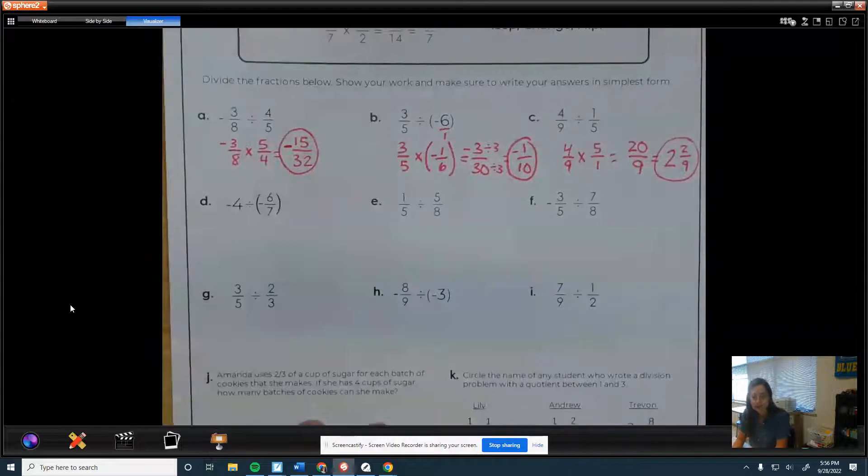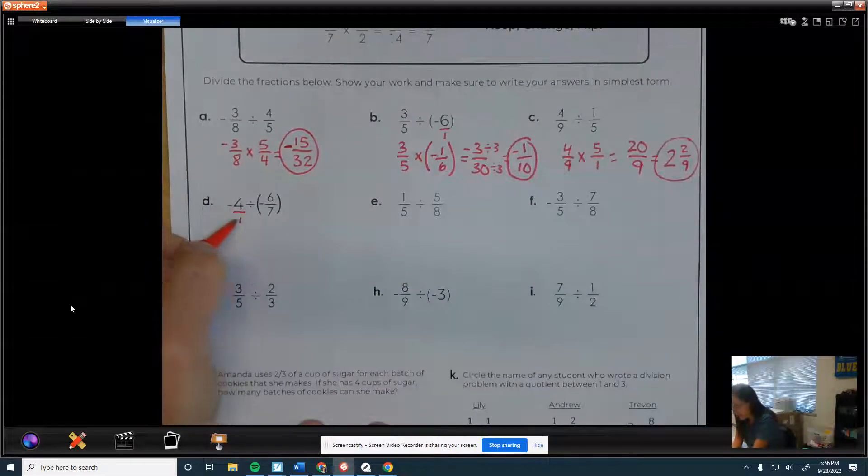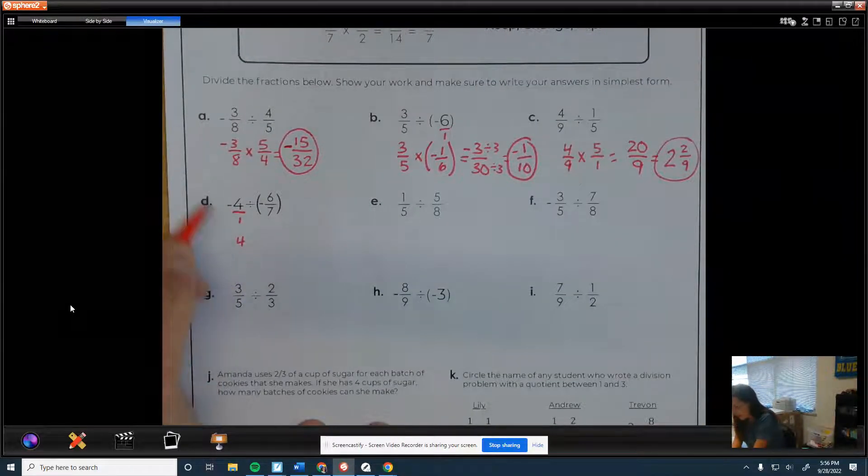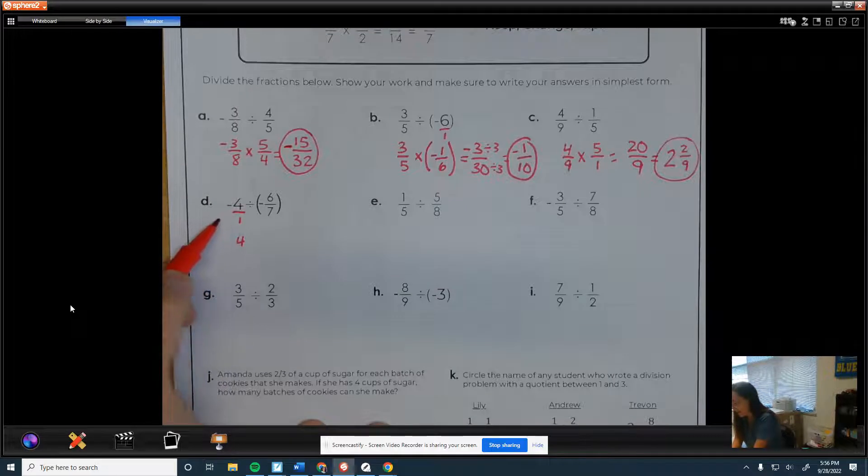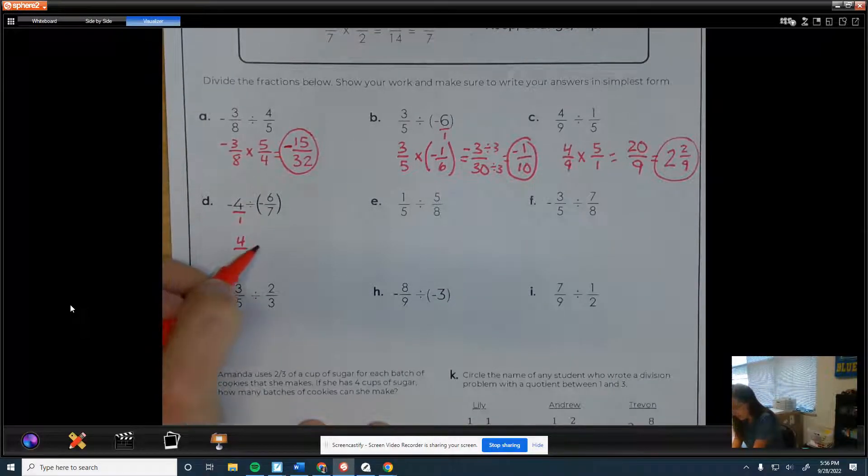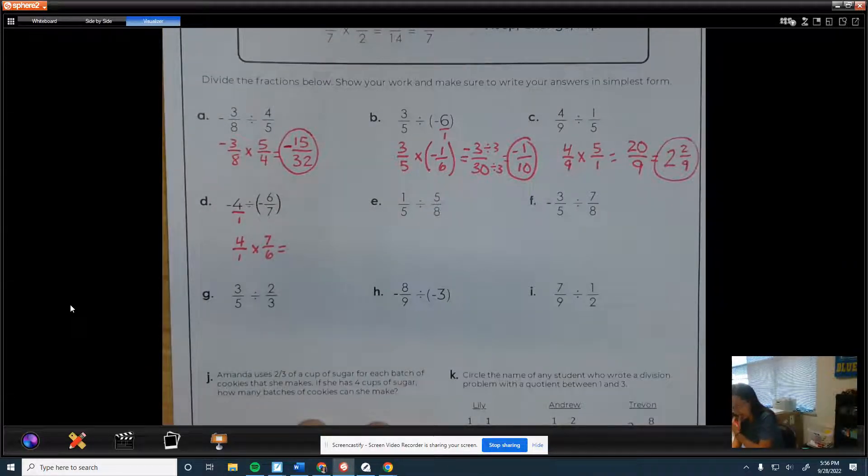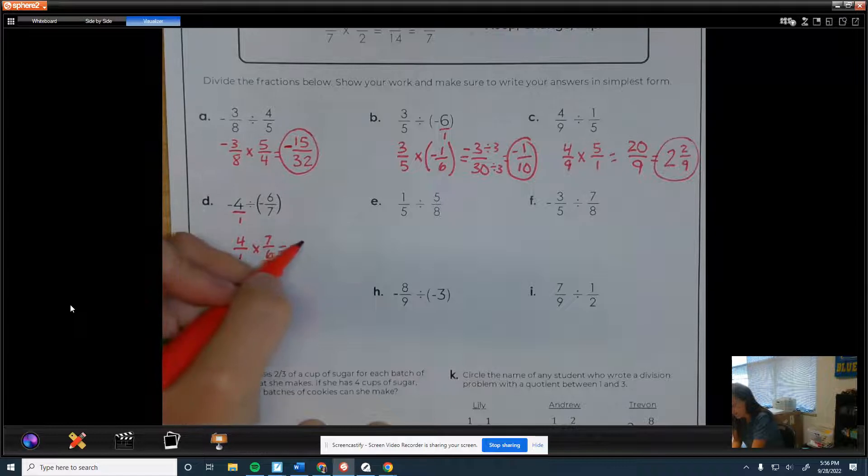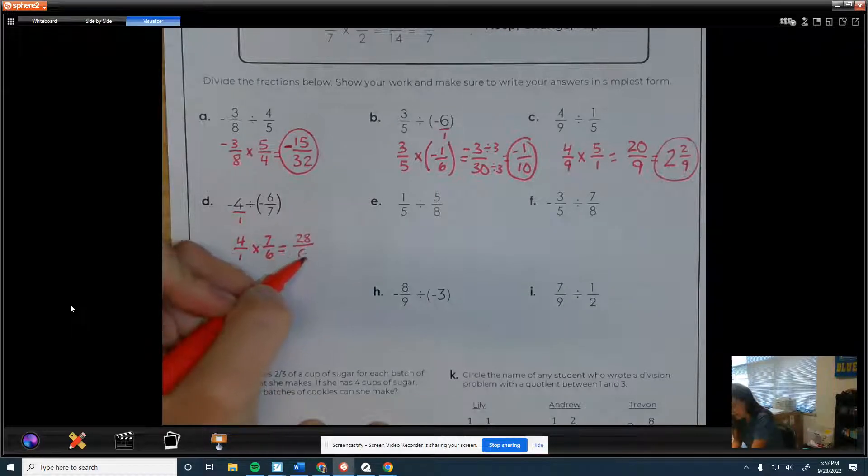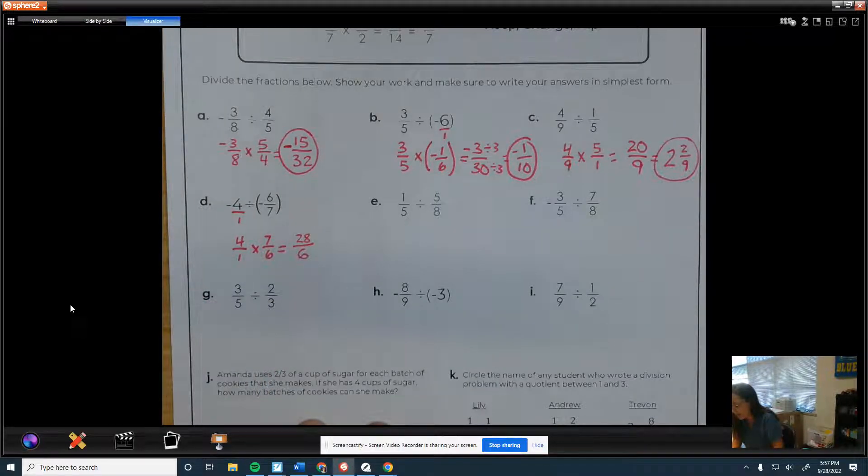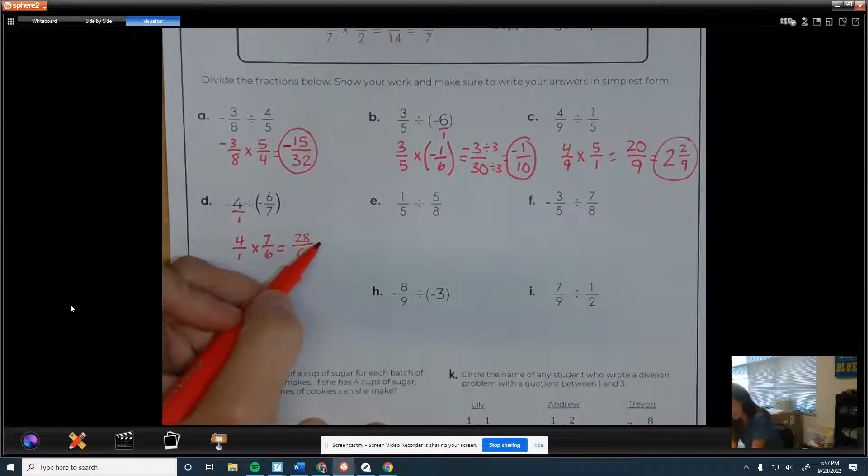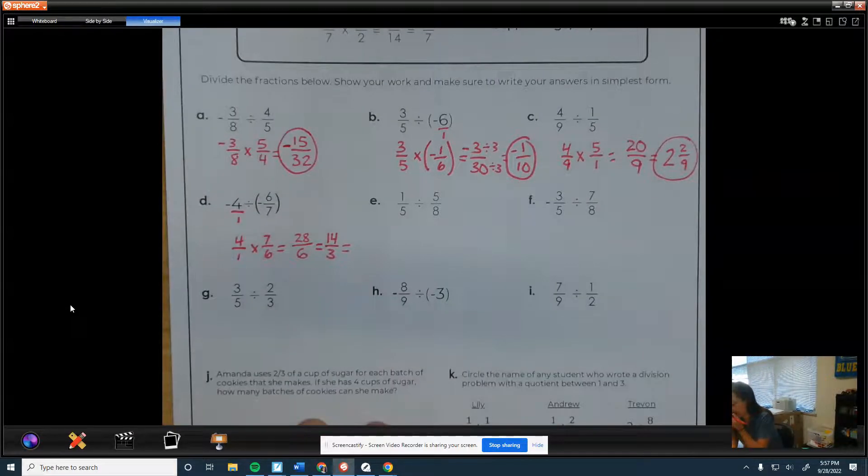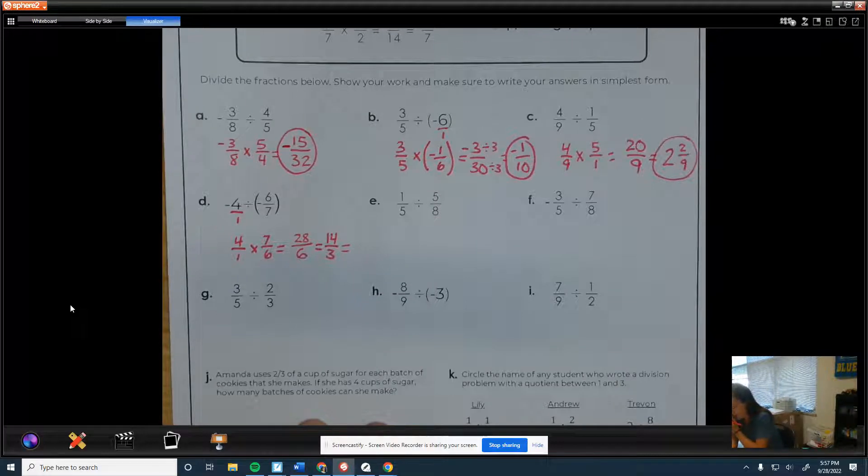Letter D. Stick a 1 under the 4. I'm just going to drop the negatives because I know a negative divided by negative is positive. So who needs them? Keep, change, flip. Four times seven is 28. Six times one is six. I'm going to cut those in half just to make it easier. So that's 14/3. And then that would be 4 and 2/3.